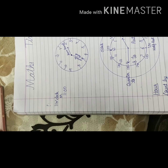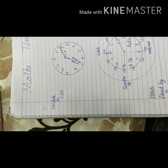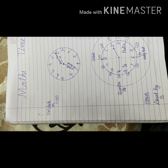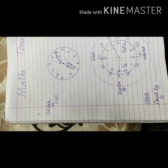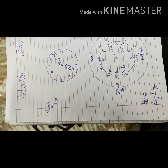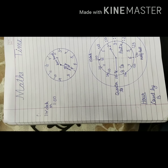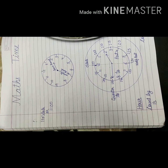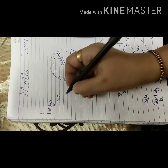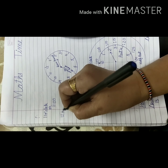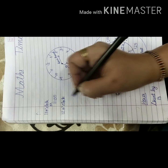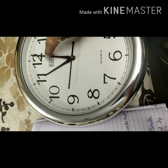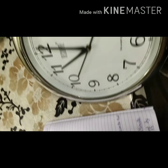It depends on whether it is a.m. or p.m. — a.m. is morning time, p.m. is evening time. Times before 12 o'clock noon are a.m., and times after 12 o'clock noon are p.m. But exactly at 12, we write neither a.m. nor p.m. — we write 12 o'clock only.